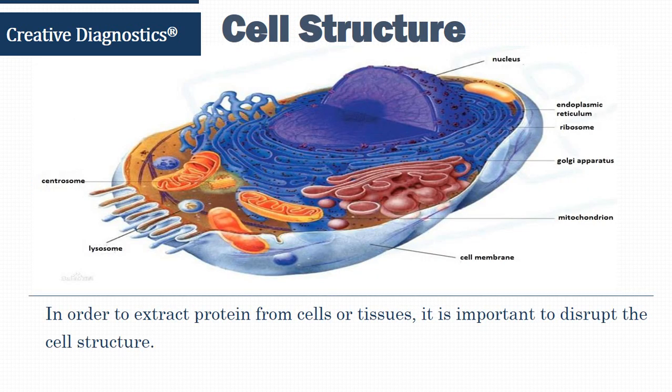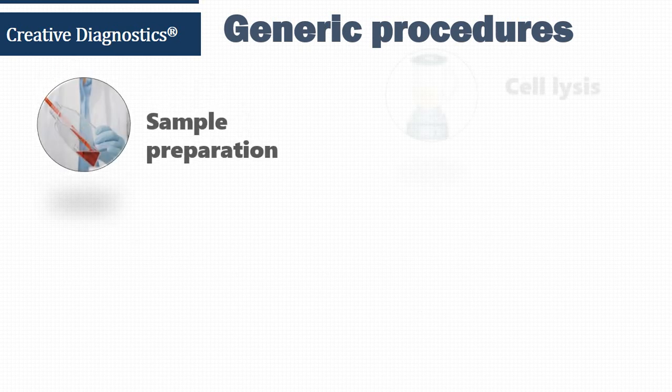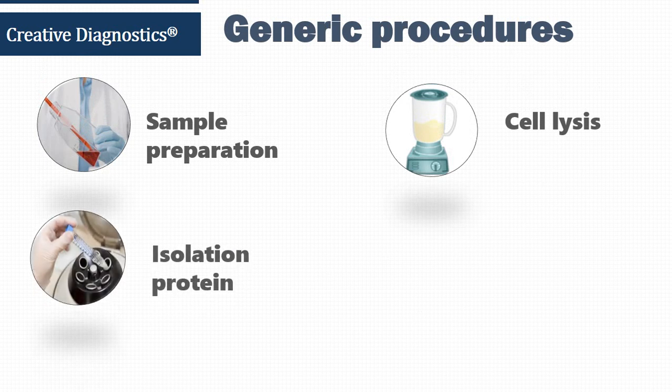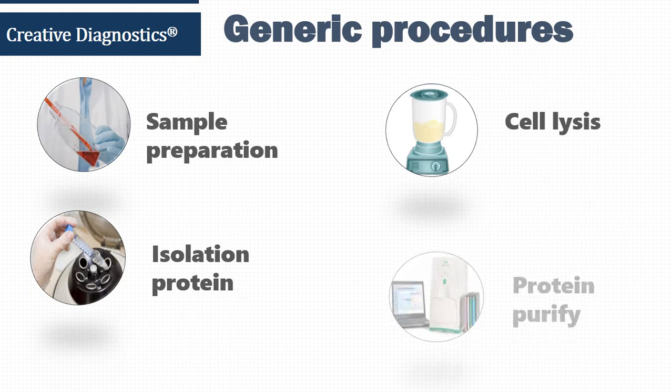As we know, proteins are always surrounded by cell structure. In order to extract protein from cells or tissues, it is important to disrupt the cell structure. The generic procedure for total protein extraction can be outlined in the following steps: Sample Preparation, Cell Lysis, Protein Isolation, and Protein Purification.